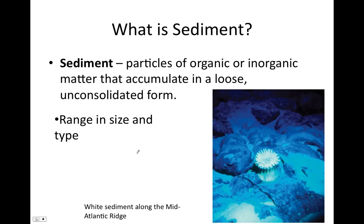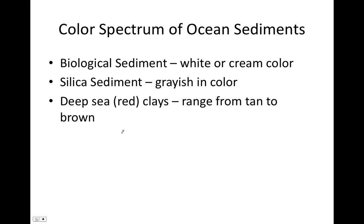Sediment can range in size from very large pieces, like boulders, to very tiny pieces, such as little particles of clay. Here's an example of some sediments on the mid-ocean ridge — you can see these white sediments deposited on the rock. Sediments come in all different colors depending on the type of sediment.